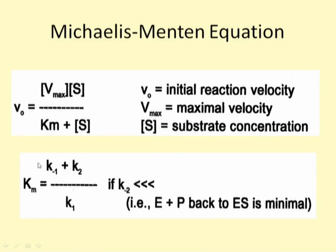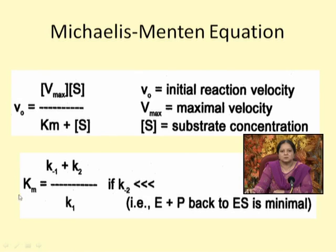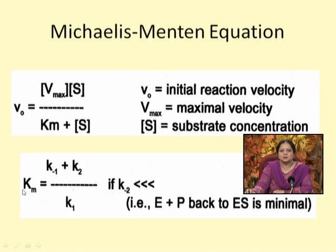When the Michaelis-Menten equation is derived using the Briggs-Haldane assumption, Km turns out to be (k-minus-1 plus k2) over k1. When derived using the Michaelis-Menten equilibrium assumption, Km turns out to be k-minus-1 over k1, and the rate constant k2 is ignored in the definition of Km. Other than that, the equation remains the same.